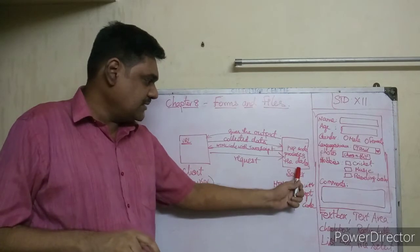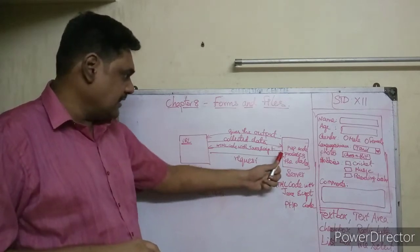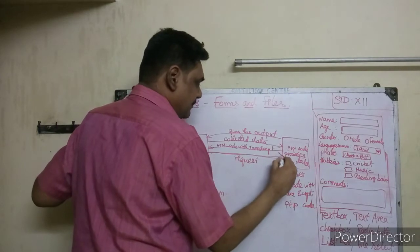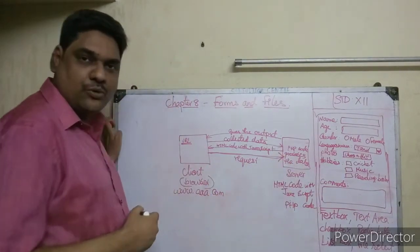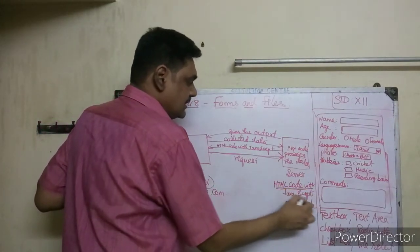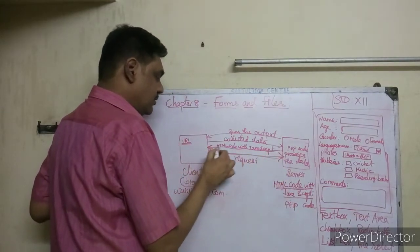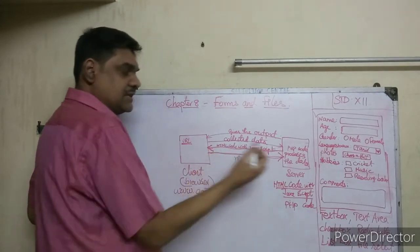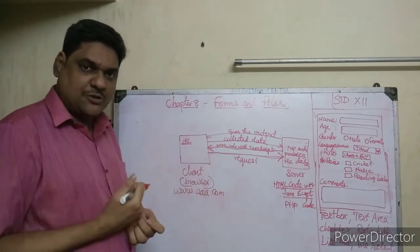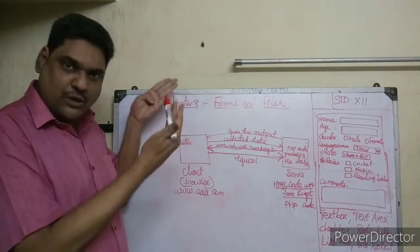In HTML with JavaScript, the first request goes to the server. The server responds with the website's HTML code along with JavaScript. That code comes to the client's computer and the browser understands it and displays the form on screen.